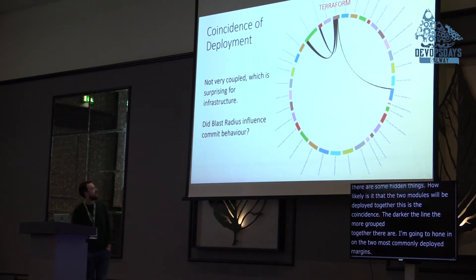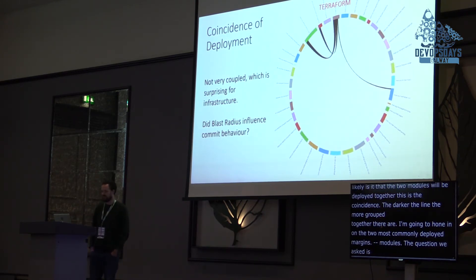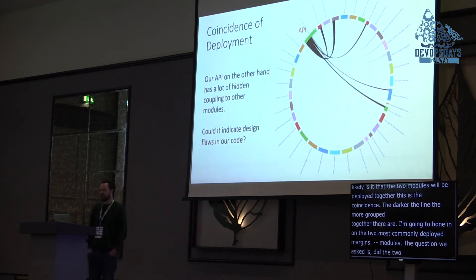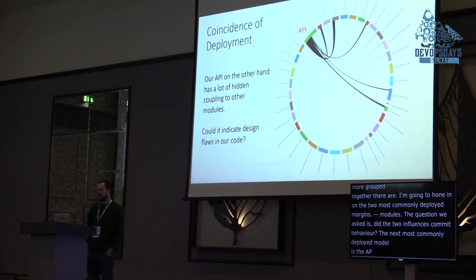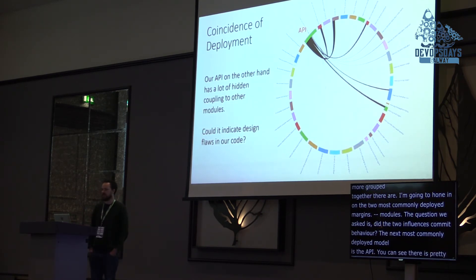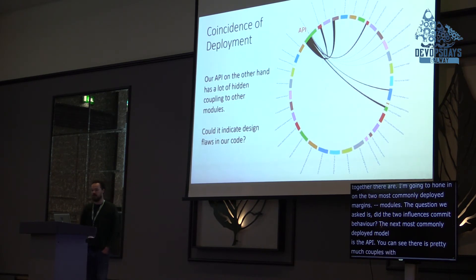The question we asked there is: did the tool influence commit behavior? Maybe. Looking at the next most commonly deployed module — our API — you can see that it's pretty much coupled to every other module. And the question we asked here is: could this indicate design flaws in our code? And it probably does.